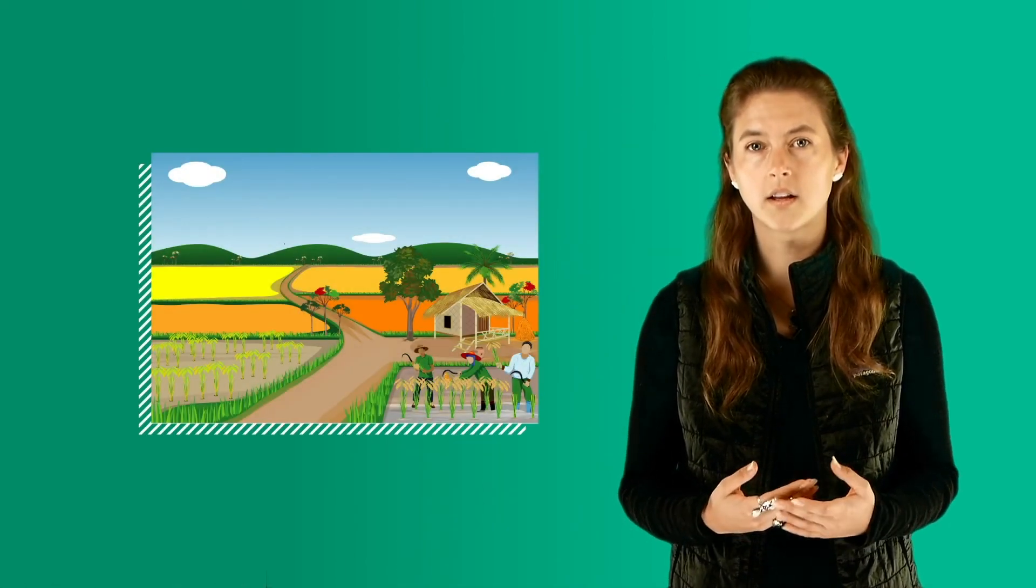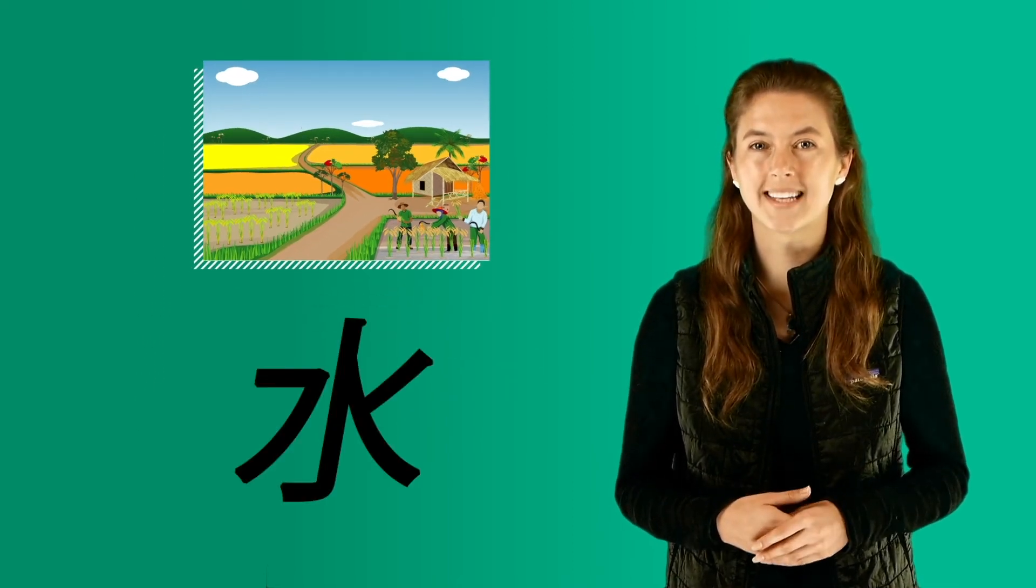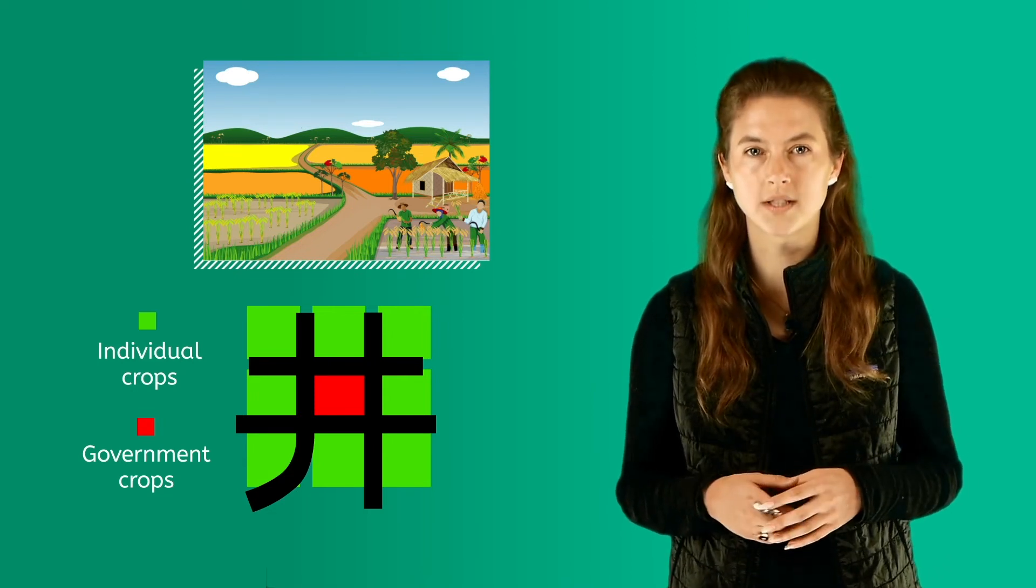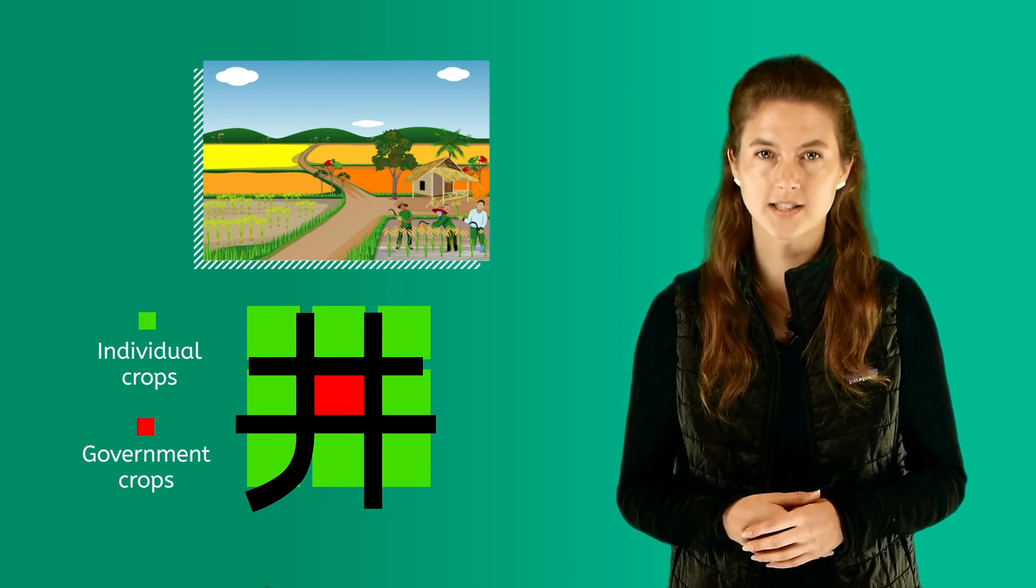They also began a form of government that was very organized. The wealthy owned the land and allowed peasants or poor people to farm it. The government created sections of land in a pattern of Chinese symbol of water that looks very much like a tic-tac-toe board. The square in the middle was farmed for the government so they could save up some of the crops for times of war or disaster.